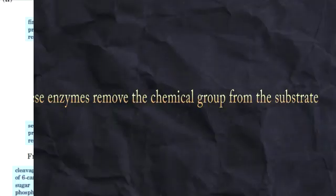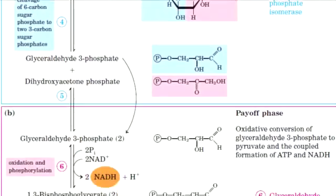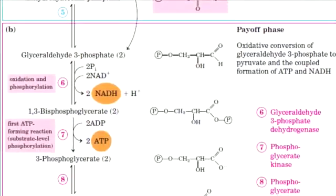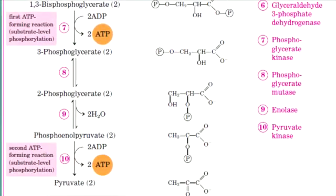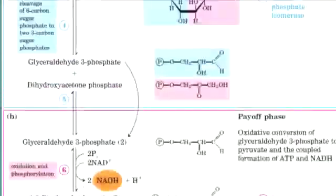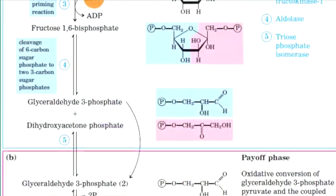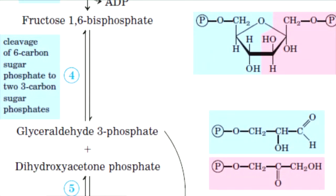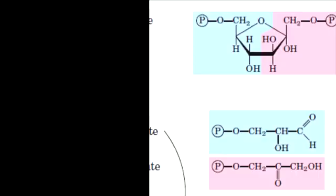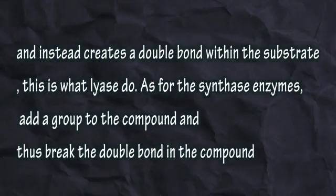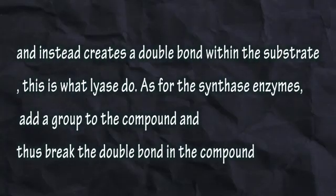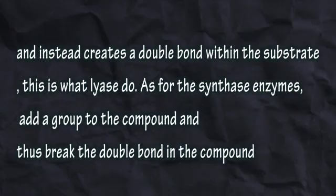The fourth type is Lyases and Synthases. Lyases are enzymes that remove a chemical group from the substrate and instead create a double bond within the substrate.